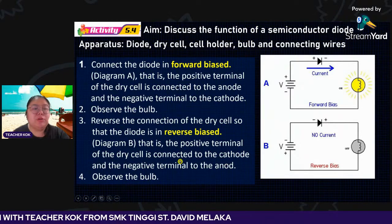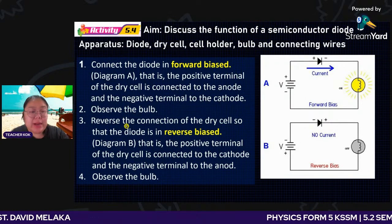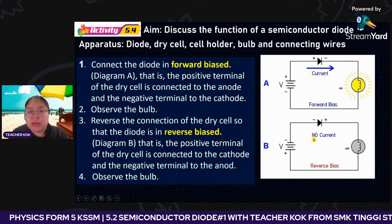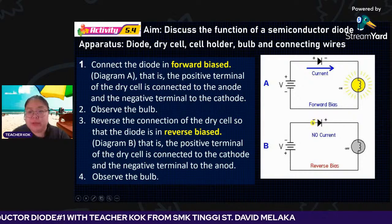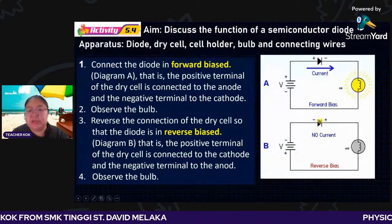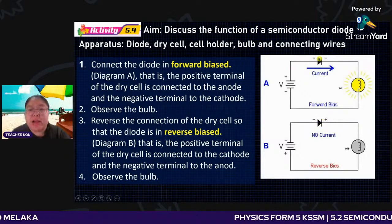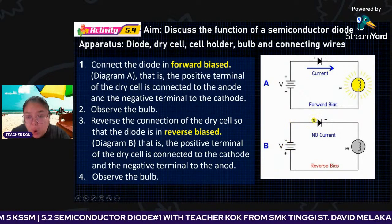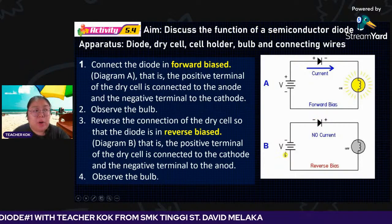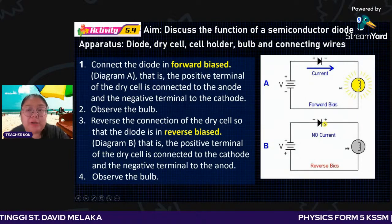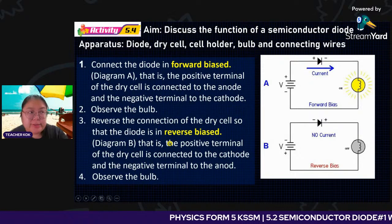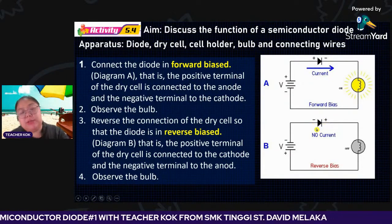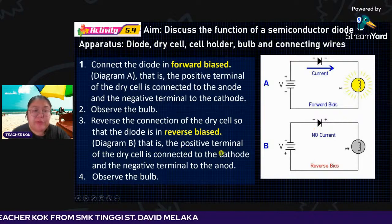Now for number three, we reverse the connection by reversing the battery. The positive and negative are labelled wrong. The direction of the semiconductor is the same, but the battery is reversed. Now negative connects to where positive should be — it cannot function. This is called reverse bias. Reverse bias means the connection is wrong — 'sambung salah.' Finally, the bulb does not light up because there is no current in the circuit.